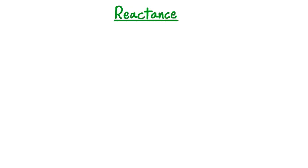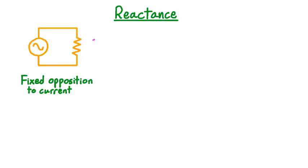Let's start by reviewing reactance, which generalizes the current-opposing quality of resistance for resistors to include inductors and capacitors as well. A resistor has the special property that its opposition to current is fixed. That is, the resistor's resistance, usually given the symbol R, is unaffected by the strength, direction, or frequency of the voltage in the circuit.